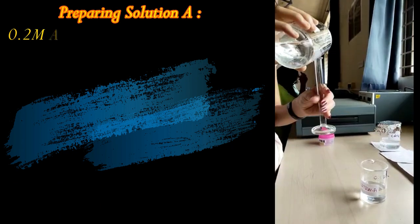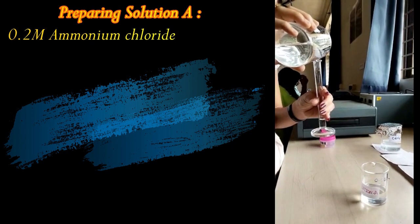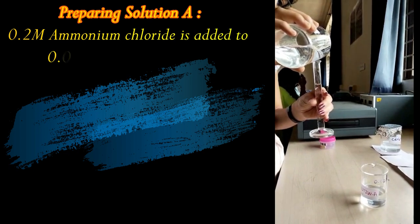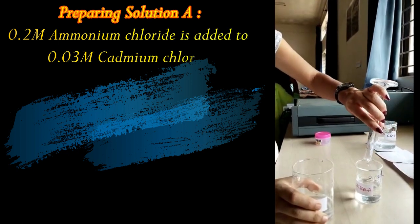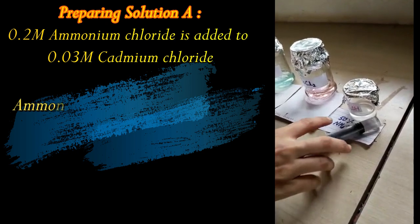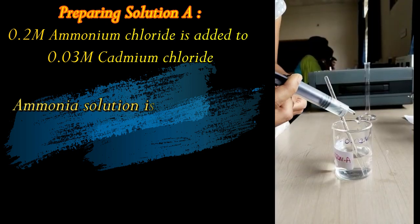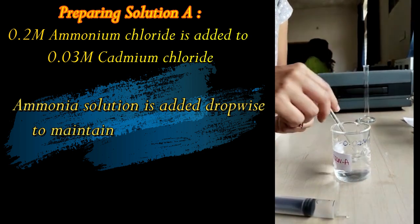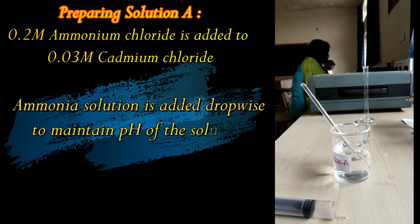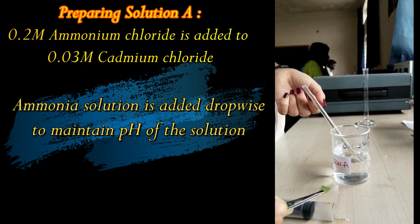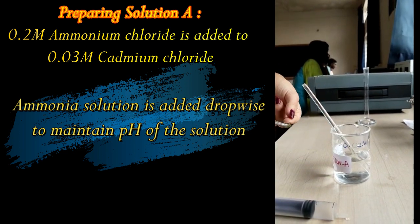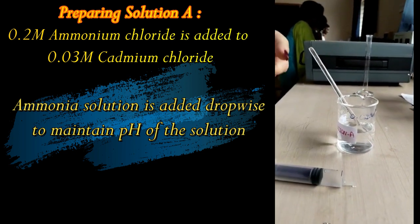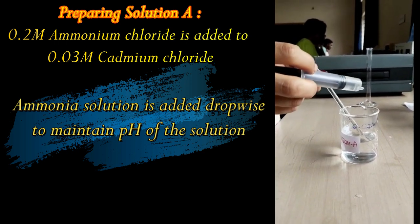One thing we need to keep in mind is the molarity so that we will get a uniform thin film. For synthesis of CdS thin films, two solutions are prepared: solution A and solution B. Solution A consists of ammonium chloride with cadmium chloride, which acts as a cadmium source, and ammonium hydroxide is added dropwise to maintain the pH of the solution to 12.